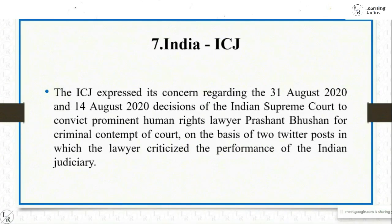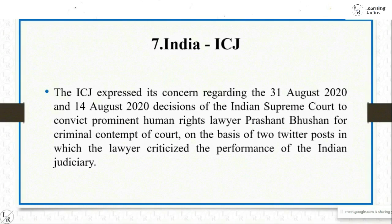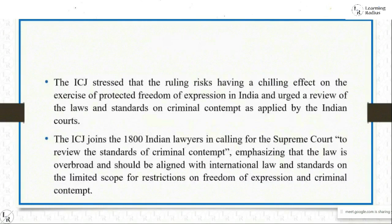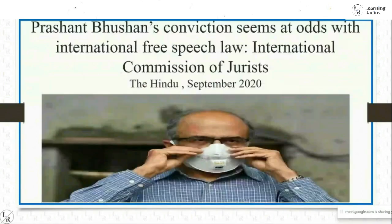The next topic involves the ICJ — International Commission of Jurists. The ICJ expressed concern regarding the Supreme Court's decisions of August 14 and August 31, 2020 to convict prominent human rights lawyer Prashant Bhushan for criminal contempt of court on the basis of two Twitter posts in which the lawyer criticized the performance of the Indian judiciary. The ICJ stressed that the ruling risked having a chilling effect on the exercise of protected freedom of expression in India and urged review of the laws and standards on criminal contempt applied by Indian courts.